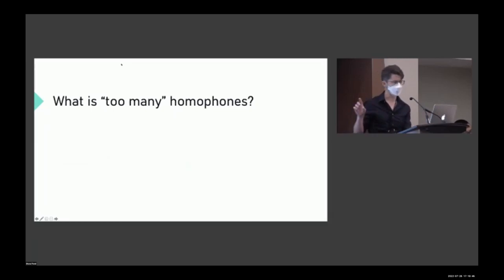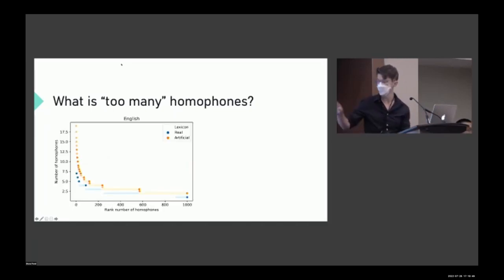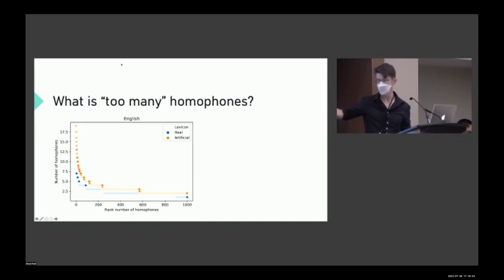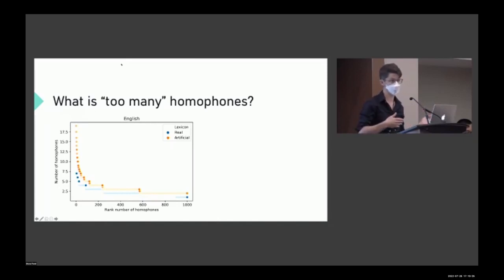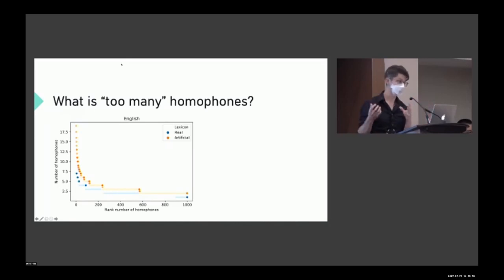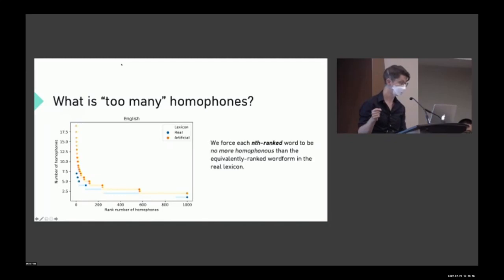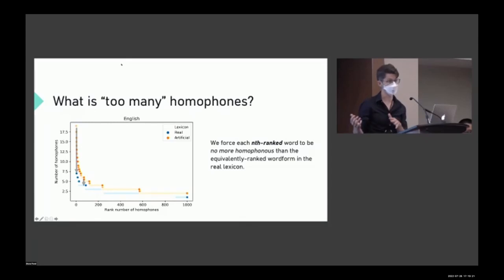To explain what 'too many homophones' means: we look at the rank distribution of homophones — the most homophonous word in the real lexicon versus one of the artificial lexica. The most homophonous word form in real English had seven additional meanings beyond its original meaning, so the maximum homophony amount is seven meanings. We force each nth-ranked word in the baseline to be no more homophonous than the equivalently ranked word form in the real lexicon, and maintain that constraint throughout the generation process.